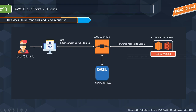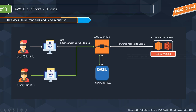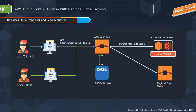When user A sends a request, the edge location checks the origin for the file and sends it back, while also caching the content in the local edge cache. If another user requests the same file, the edge location checks its local cache first. If the file is already cached, it is returned directly from the edge cache without contacting the origin — making it much faster than the first request. Regional edge caches have larger capacity, so objects remain cached longer there as well.